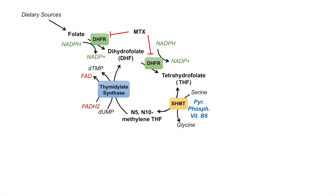So thymidylate synthase is critically important in that it recycles N5,N10-methylene tetrahydrofolate to dihydrofolate, but its main purpose is to produce deoxythymidine monophosphate, or dTMP, from deoxyuridine monophosphate, or dUMP. Because it is critically important in DNA synthesis, it is a great target for anti-cancer treatments. One of those is 5-fluorouracil, or 5-FU, which inhibits thymidylate synthase.